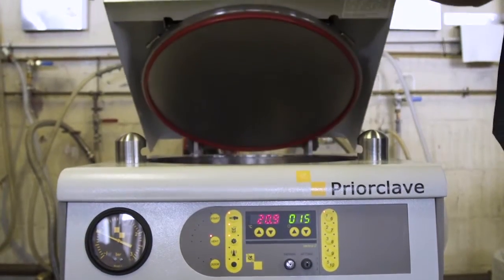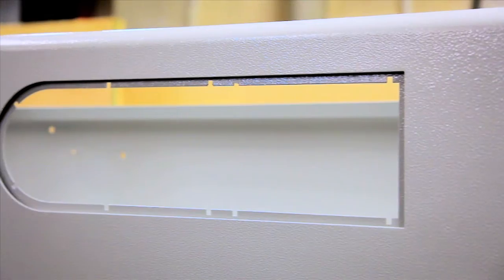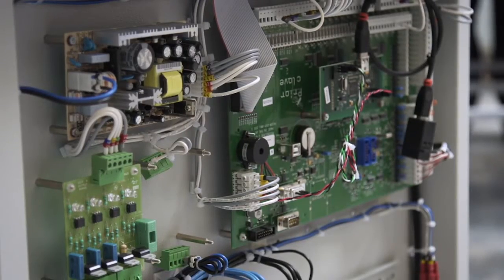The autoclave has three major parts: the pressure vessel, a frame and panels to support and cover it, and wiring and controls to manage the system.